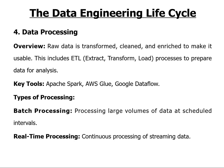The next step in the lifecycle is data processing. We have raw data stored in the cloud platform, either structured or unstructured. Now we are processing the data — raw data is transformed, cleaned, and enriched to make it usable. Data processing includes three major components: Extract, Transform, and Load (ETL). The tools used for data processing include Apache Spark, AWS Glue, and Google Dataflow.